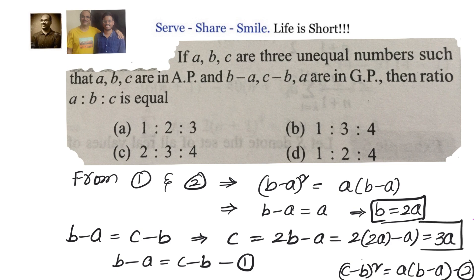Now we have got B and C in terms of A, so we can go to A is to B is to C and we can write down A is to B which equals 2A, and C which equals 3A. So A is to B is to C equals A is to 2A is to 3A.